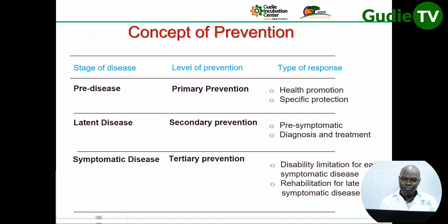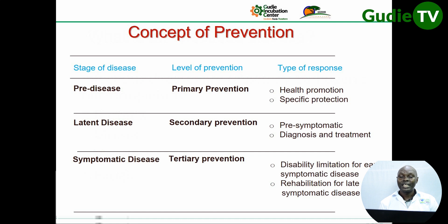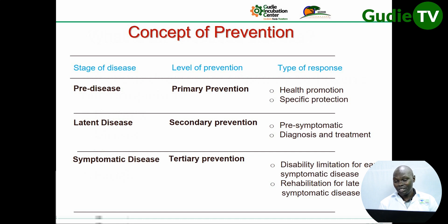Prevention can be looked at in terms of the stage of a disease, the level of prevention, and the type of response. There are three stages of disease: pre-disease, latent disease, and symptomatic disease.